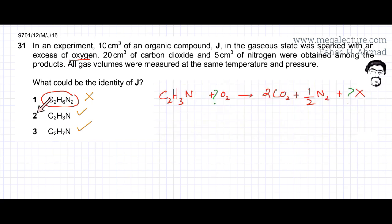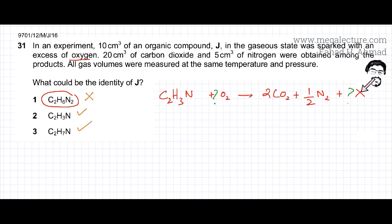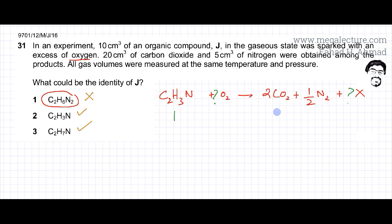Now I'll redo everything for compound 2, which I already know will be correct. I have C₂H₃N, this is compound J, combusted with oxygen again. It produces carbon dioxide, N₂, and some other compound X. Balancing: there are two carbons, so two CO₂ at the other end. There is only one nitrogen, so that's half N₂.